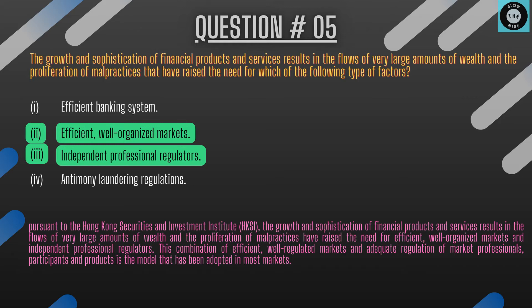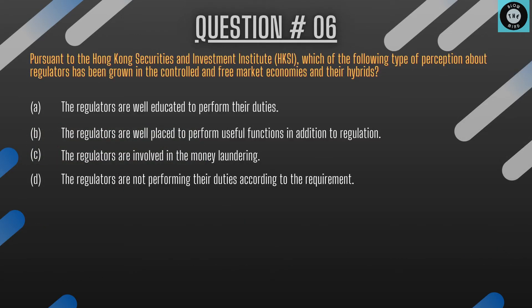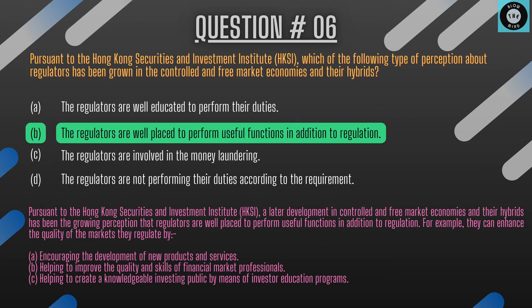The question is: pursuant to the Hong Kong Securities and Investment Institute, which type of perception about regulators has grown in controlled and free market economies and their hybrids? The explanation: a later development in controlled and free market economies and their hybrids has been the growing perception that regulators are well placed to perform useful functions in addition to regulation. For example, they can enhance the quality of the markets they regulate by: a) encouraging the development of new products and services, b) helping to improve the quality and skills of financial market professionals, c) helping to create a knowledgeable investing public by means of investor education programs.